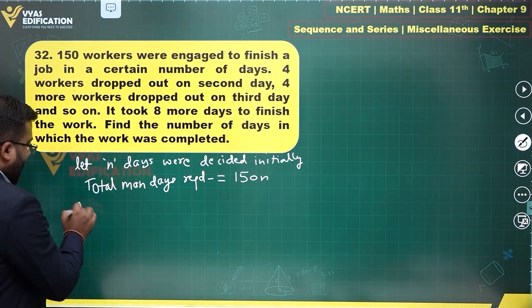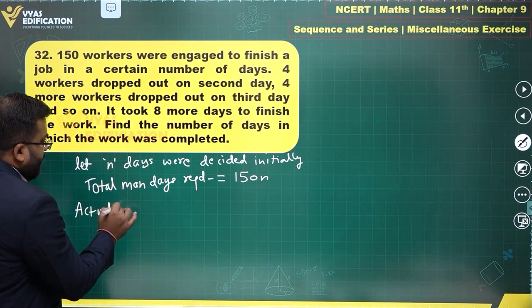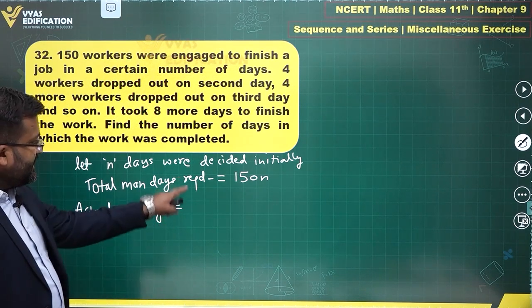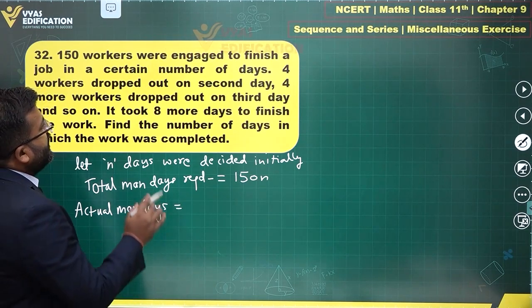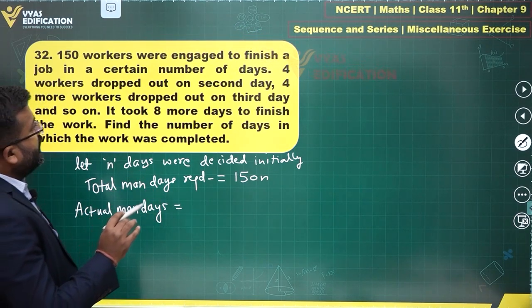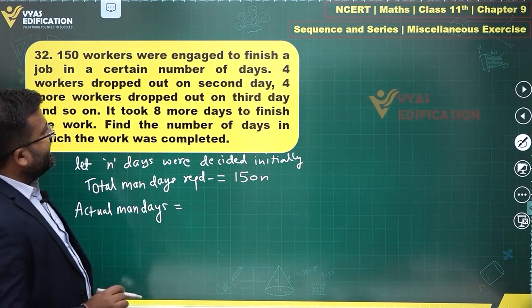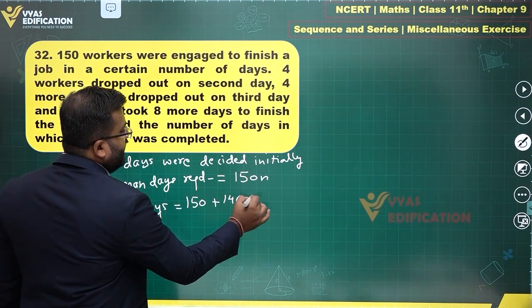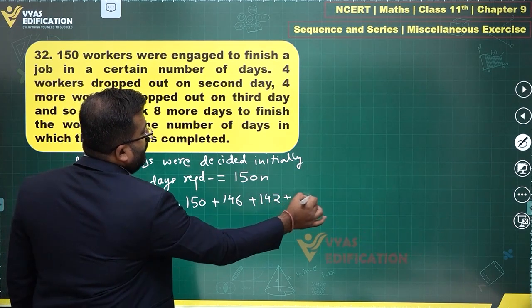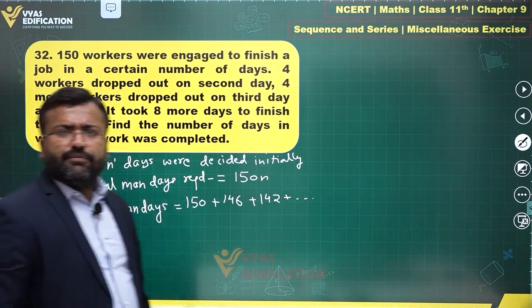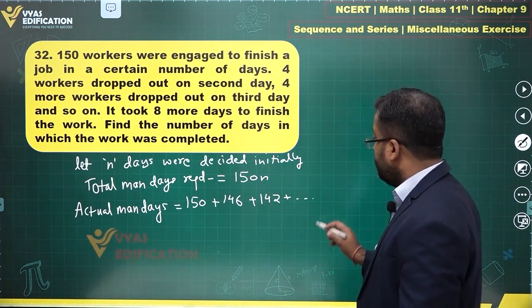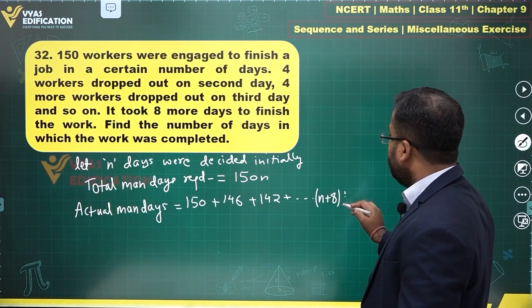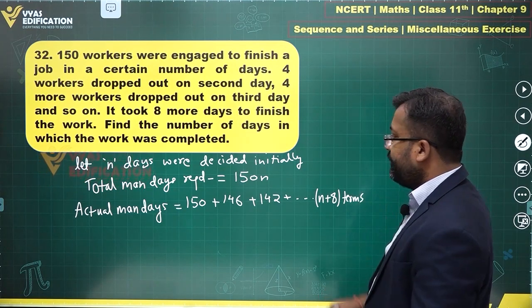But what happened was actually, actual man days will be how many? Although this and this has to be equal, but actual man days, on the first day, you had complete 150. On the second day, 4 dropped. So 150, then you add 146, then you add 142, and so on. How many terms will be here? 8 more days were taken to solve, to finish the work. So this is n plus 8 terms.